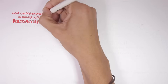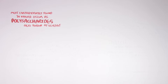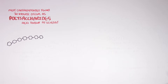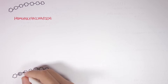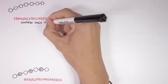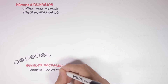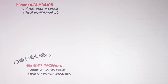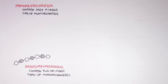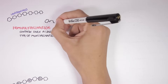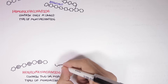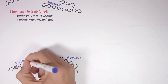Most carbohydrates found in nature occur as polysaccharides, also known as glycans. To simplify things, polysaccharides can be a homopolysaccharide — containing only a single type of monosaccharide, such as only glucose — or a heteropolysaccharide, containing two or more different monosaccharides. Additionally, a polysaccharide can be unbranched or branched, and this applies to both homopolysaccharides and heteropolysaccharides.